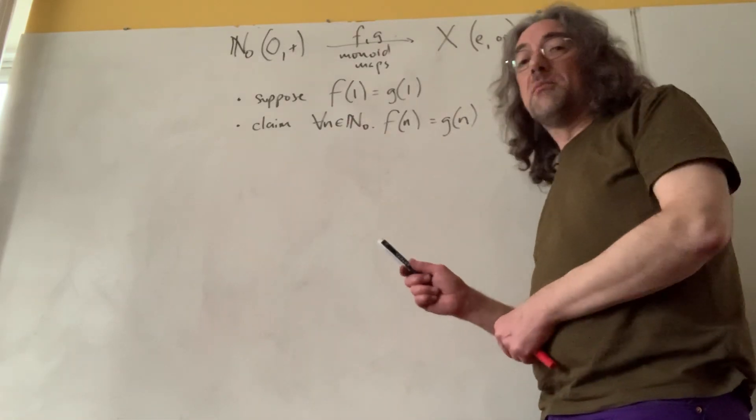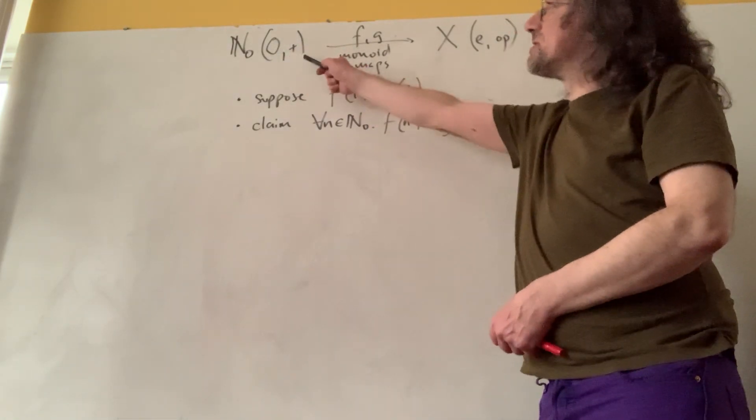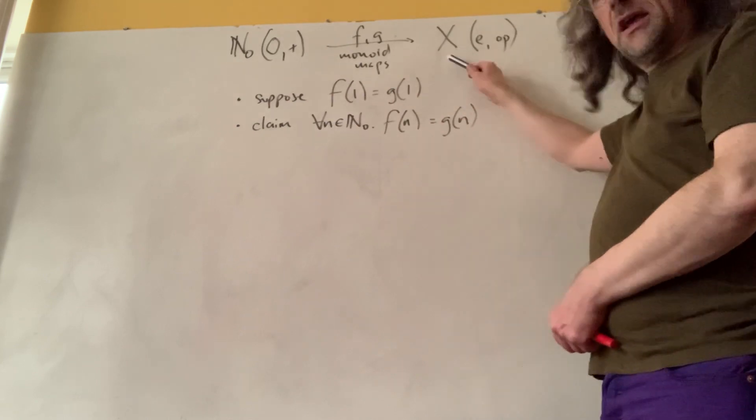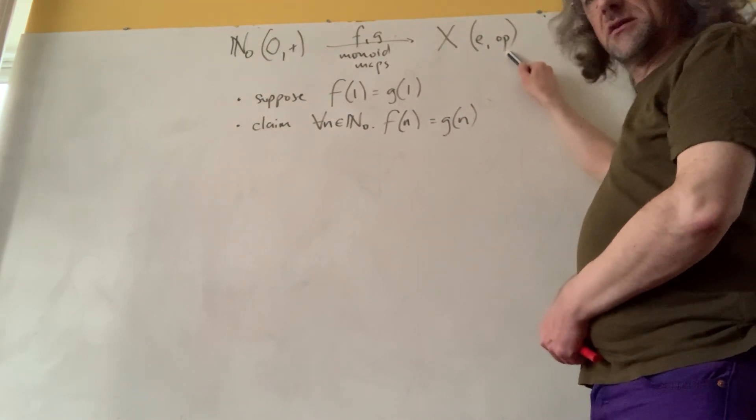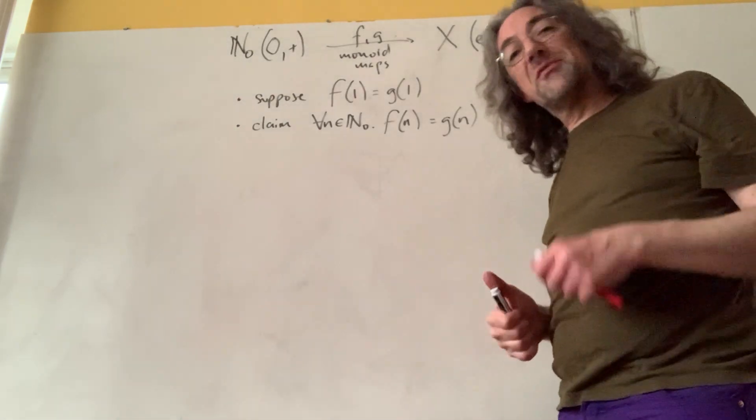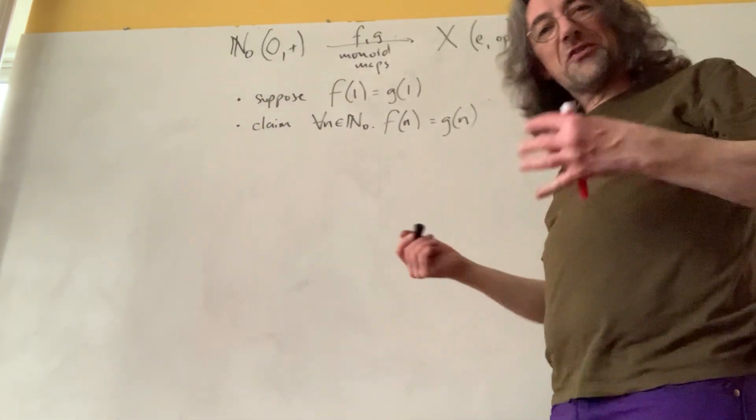Here's a fun fact about monoid maps from the natural numbers with zero and addition to any other monoid, x with neutral element e and operator ob. They are completely determined by what they do with 1.